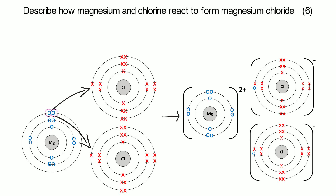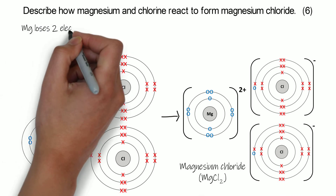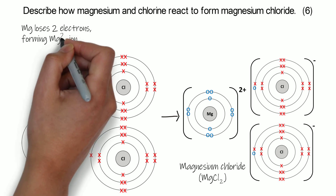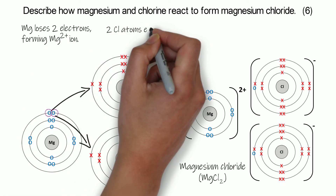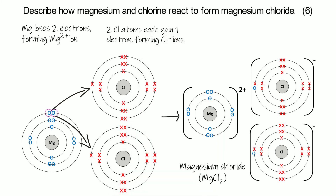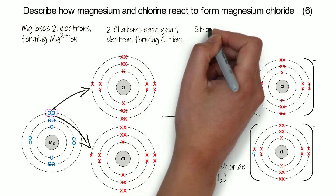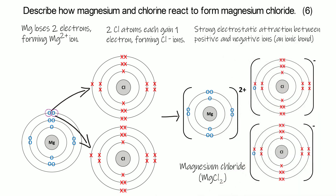The ions we form are Mg²⁺ and two Cl⁻ ions, forming magnesium chloride — MgCl₂. Your marking points for this will be: magnesium loses two electrons and forms Mg²⁺ (a positive ion); two chlorine atoms each gain one electron and form negative Cl⁻ ions; and there's a strong electrostatic attraction between the positive and negative ions — that is your ionic bond.